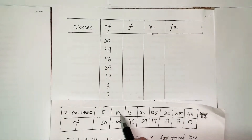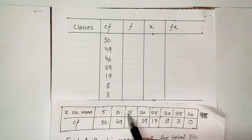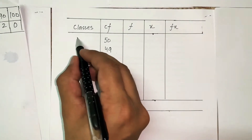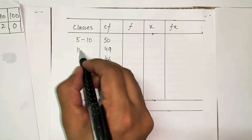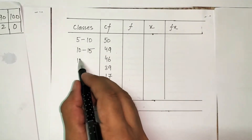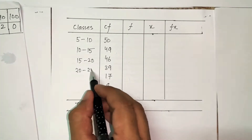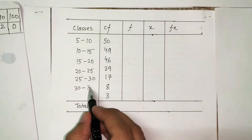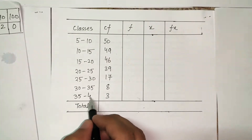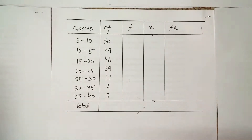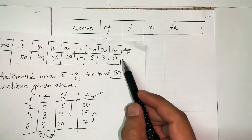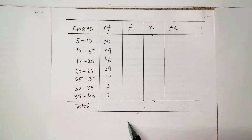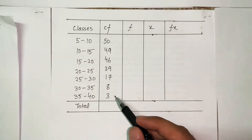The class intervals are: 5–10, 10–15, 15–20, 20–25, 25–30, 30–35, 35–40. At 40 the frequency given is 0, meaning there is nothing which is 40 or more, so I do not need to create another class from 40 to 45. Now I will calculate the simple frequency, since this cumulative frequency is accumulated from bottom to top.